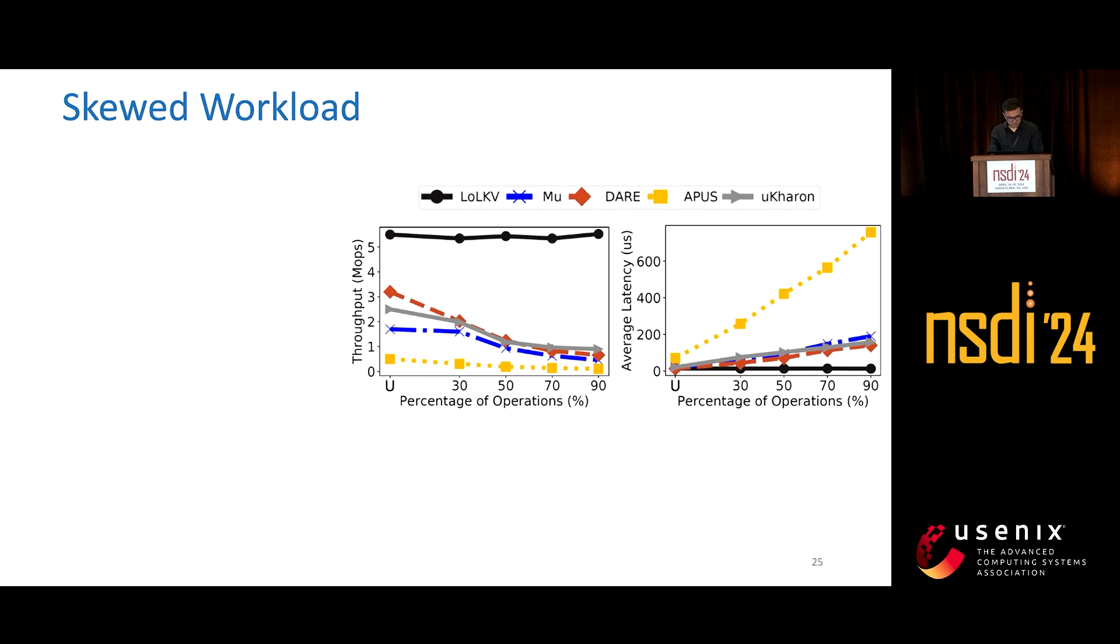We wanted to handle skewed workloads efficiently. To test this, we use a uniform workload, but among all the shards, we ensure that one shard is more popular than the rest. On the x-axis, we see the percentage of operations handled by this popular shard. On the y-axis, we have either throughput or latency.